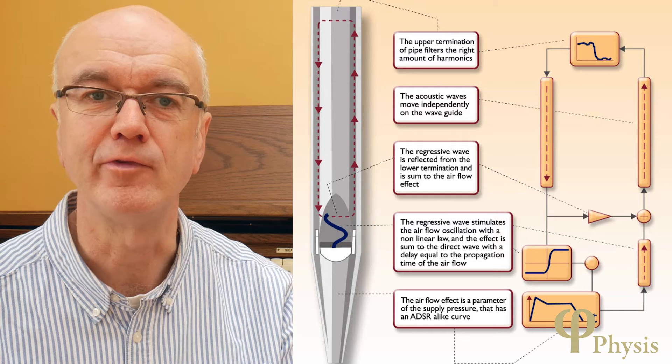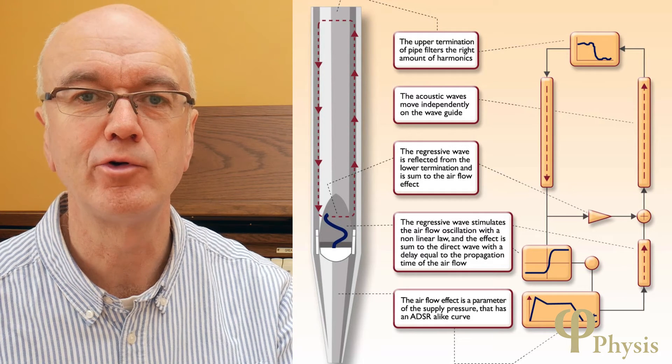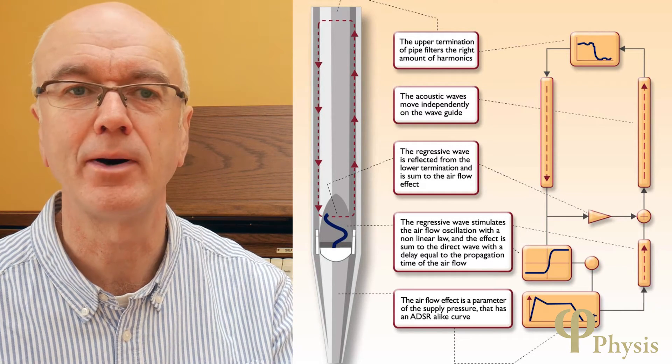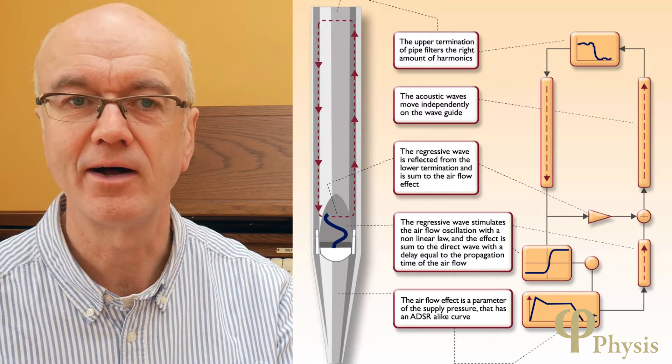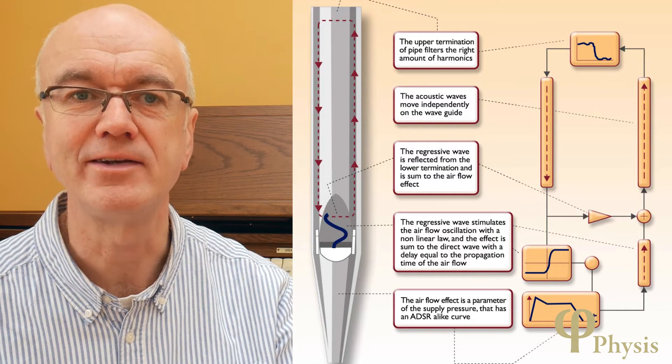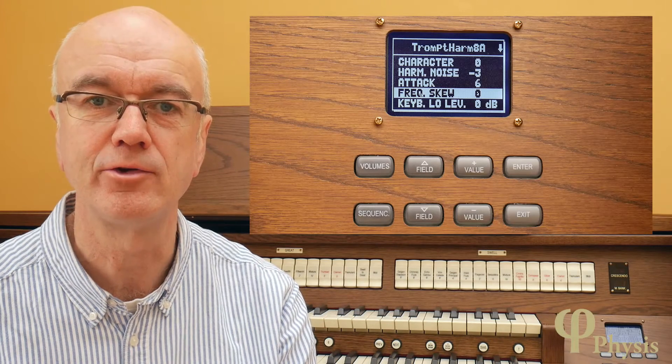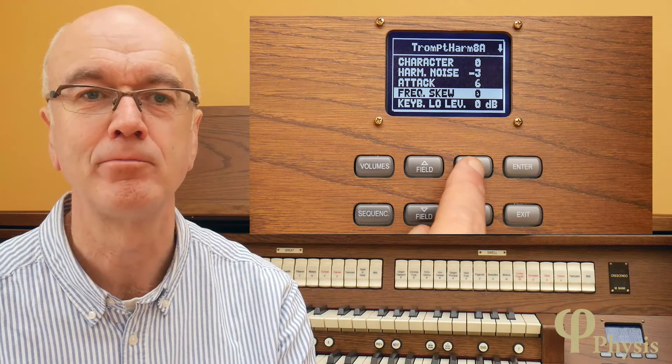Whereas a pipe voicer would be able to adjust things like the scale of the pipe, the cut up, the height of the mouth and so forth, the Physis model translates these things into controls that an ordinary user can approach more easily.